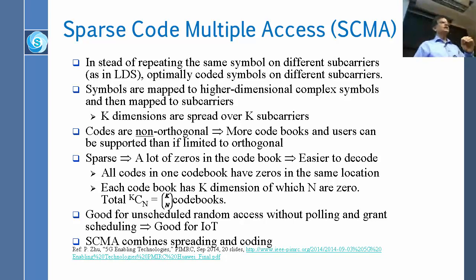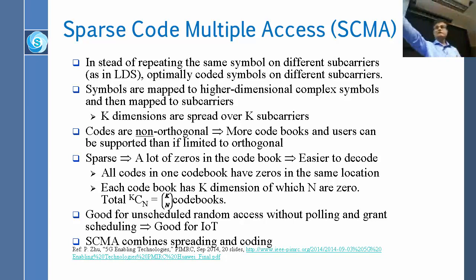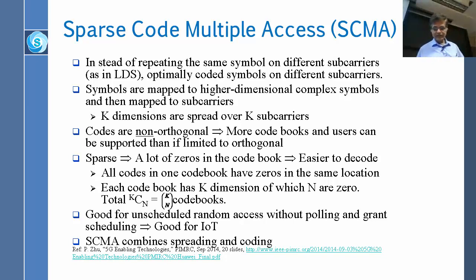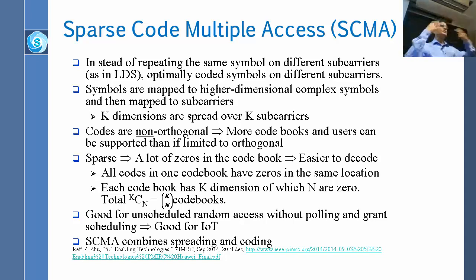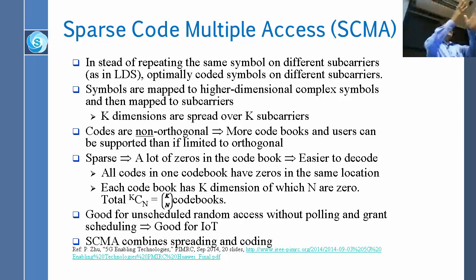The rule in SCMA is: when a user selects a codebook, the same rows are zero throughout all entries of that codebook — not necessarily matching other users' codebooks. In your codebook, the same rows are always zero. This enables grant-free access: you don't need permission to speak. As long as you use your assigned codebook, you can transmit at the same time as other users and the base station can decode each one separately.